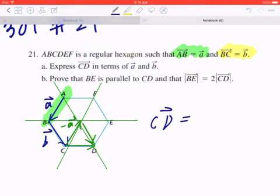So this equals to negative A. Now likewise, if you look at the second part, this is going to be B. So again, BC equals to B, and this is B as well. So therefore, CD equals to negative A plus B.